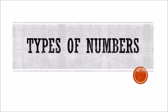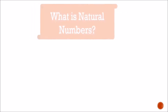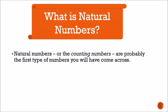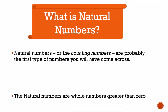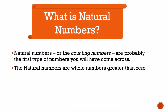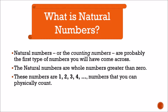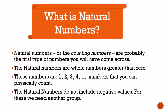Now let's start with natural numbers. What is a natural number? Natural numbers, or we can say the counting numbers, are probably the first type of numbers you will have come across. The natural numbers are whole numbers greater than zero. These numbers are 1, 2, 3, 4, and so on. The natural numbers do not include negative values.